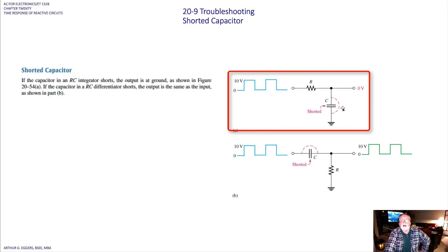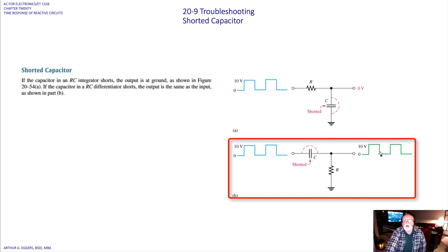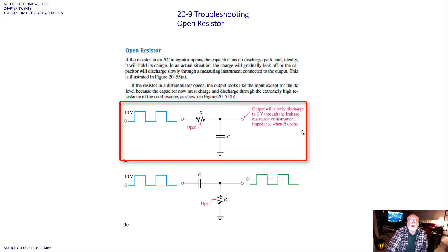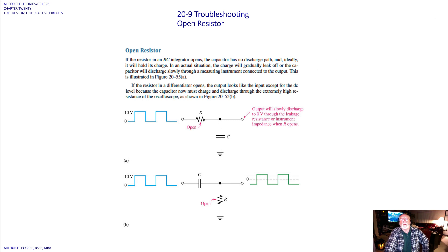With a shorted capacitor — where there's a dead short through it, possibly from too much current or bad material — you end up with either nothing or a straight pass-through on your signal. If you've got a burned-out or open resistor, the output will slowly discharge to zero through leakage in the resistor or instrument impedance. In a parallel configuration, you again get a pass-through. In the lab, check whether your equipment has the capability to test and simulate these types of output faults.